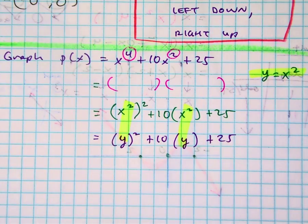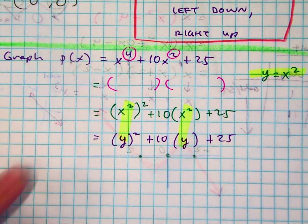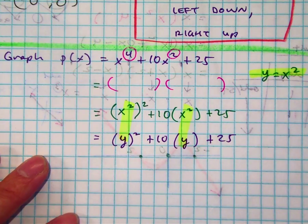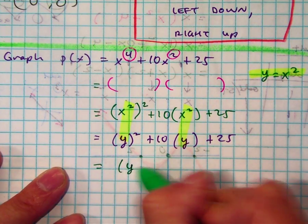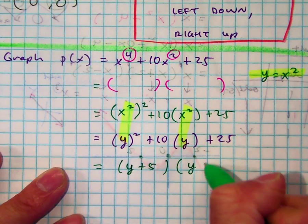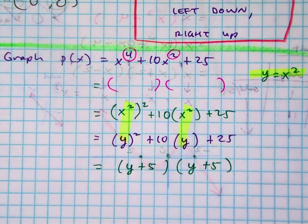Is that something you can do now? Yeah. That feels a little more comfortable. So if you just factor that, you're going to recognize you're going to get y plus 5, y plus 5. Did you guys see that?